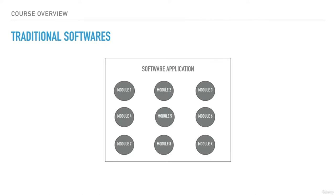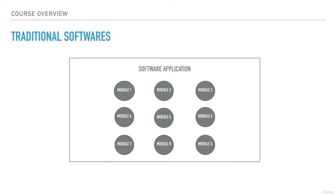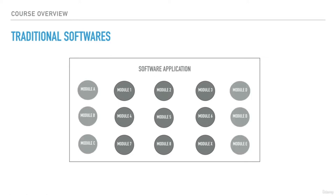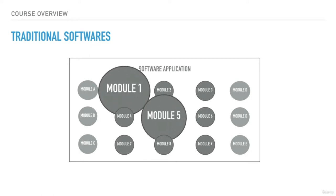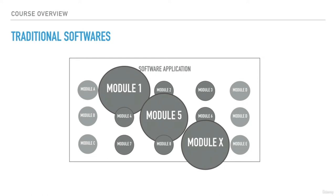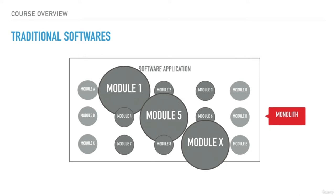In traditional mode, software systems are developed by keeping multiple modules together as one unit. But as the requirements for businesses grow, more modules need to be added or existing modules start getting bigger. Beyond a point, it becomes difficult to maintain such systems — we cannot fix issues on time, we cannot extend them with new feature sets. Such big systems are also termed as monoliths.